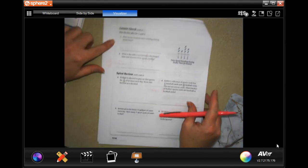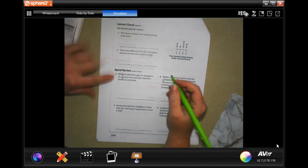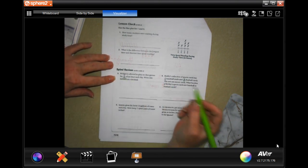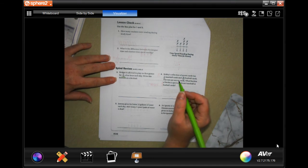We're going to go over to the lesson check. You guys are going to do those and spiral review. Bridget is allowed to play online games for 75/100 of an hour each day.